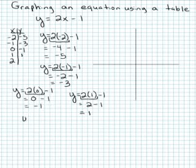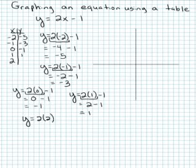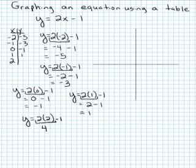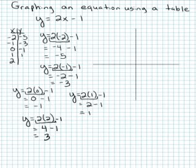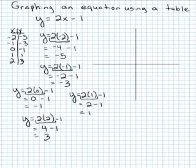Finally, I'm going to put 2 in place of x. Following order of operations, 2 times 2 is 4, and 4 minus 1 is 3. So when x equals 2, y equals 3.